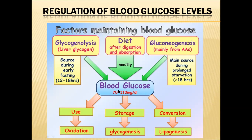Once blood glucose levels exceed the normal range, all the extra glucose molecules enter into the cells and participate in cellular respiration or oxidation. If excess glucose remains after oxidation, it participates in glycogenesis or lipogenesis. In adipose tissue, excess glucose participates in lipogenesis and is converted into lipids stored in adipose tissue. In other tissues, excess glucose participates in glycogenesis and is stored in the form of glycogen.